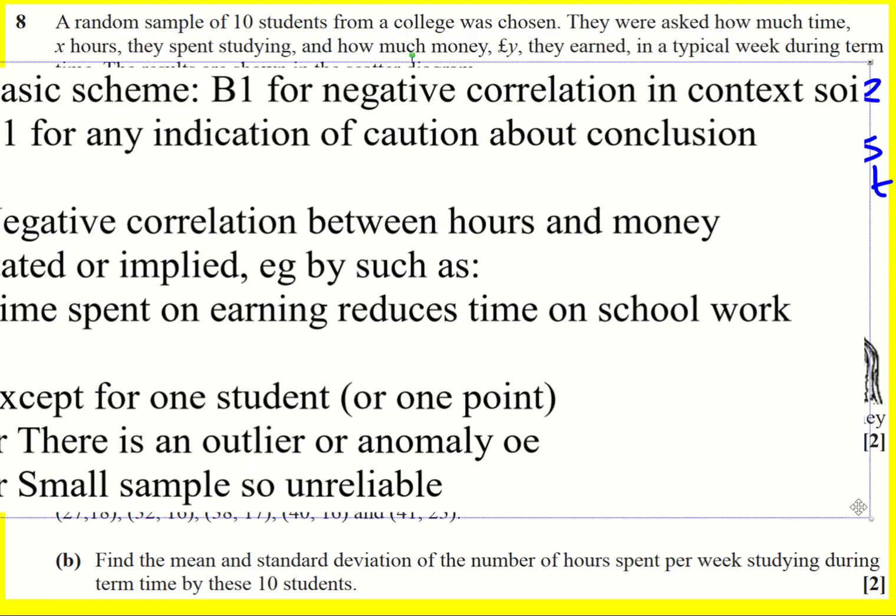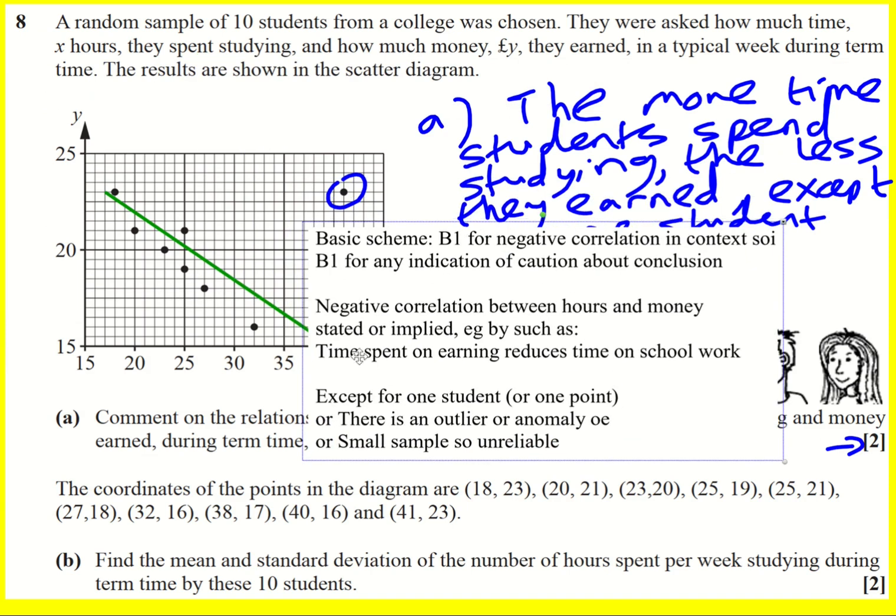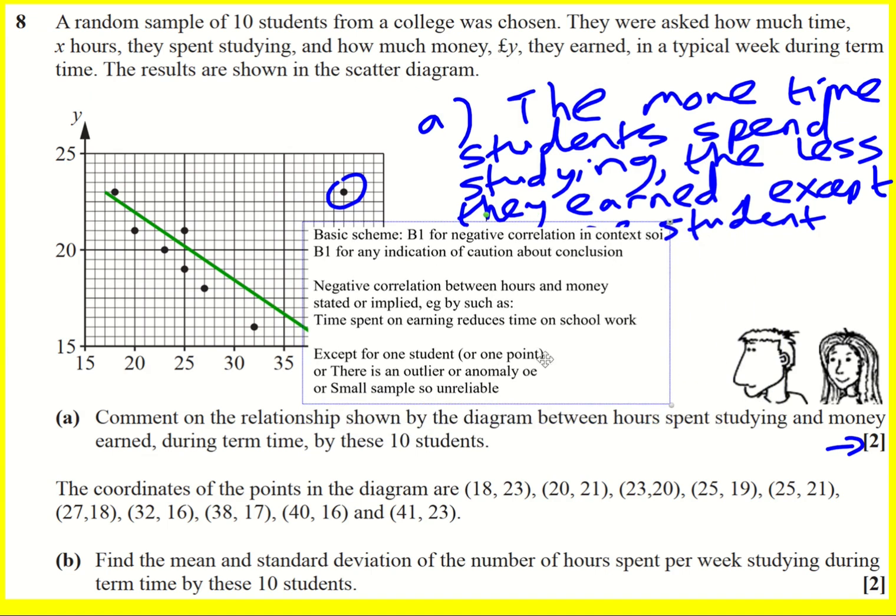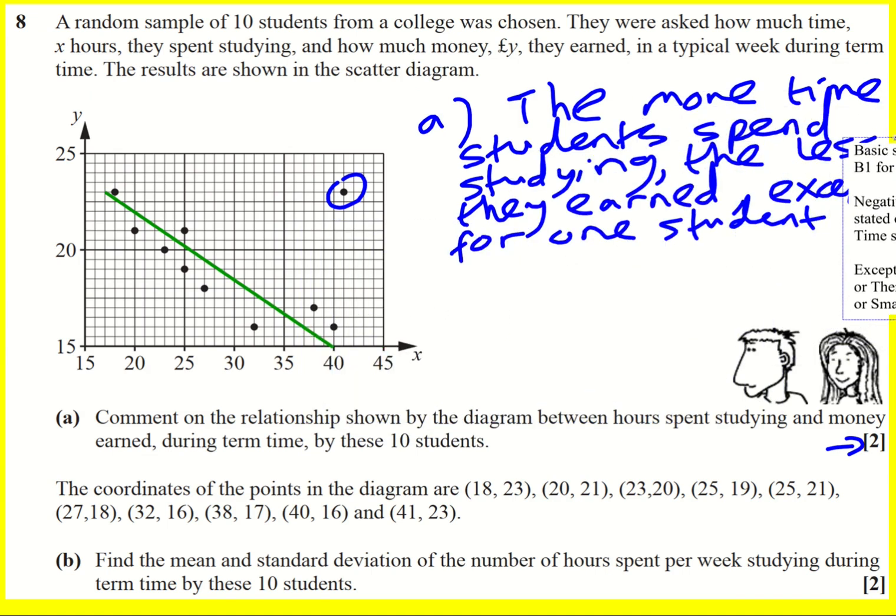Here's the mark scheme in fact. Okay, so looking for reference about negative correlation and looking for some reference to the anomaly. Just hold it there. Okay, I'm going to get rid of it. I think my answer's pretty decent.